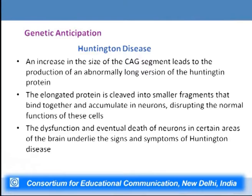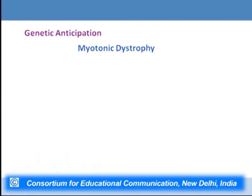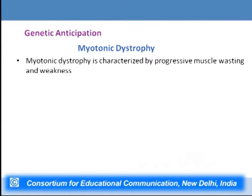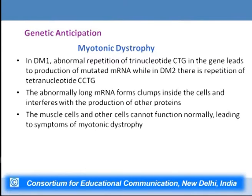This increase in trinucleotide segment size usually occurs from one generation to the next, and it is anticipated that the progeny will have much more deleterious symptoms compared to the parent. Another example is myotonic dystrophy, characterized by progressive muscle wasting and weakness. Type 1 is caused by the DMPK gene with CTG repeat expansion, and type 2 is caused by the CNBP gene with CCTG tetranucleotide repeat expansion. If the number of these repeats increases, the length of the mRNA abnormally increases, leading to deleterious results for muscle cells.